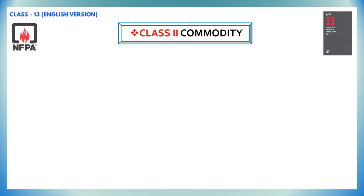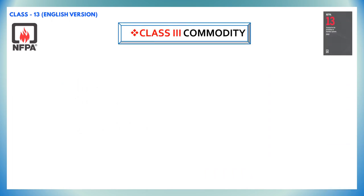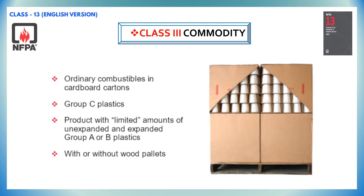Class 2 commodity is defined as a non-combustible product that is in insulated wooden crates, solid wood boxes, multiple layer corrugated cardboard boxes, or equivalent combustible packaging material. Class 3 commodity is defined as a product fashioned from wood, paper, natural fibers, or group C plastics with or without cartons, boxes, or crates. A class 3 commodity shall be permitted to contain a limited amount — that is 5% or less by weight of non-expanded plastic, or 5% or less by volume of expanded plastic of group A or group B plastics.